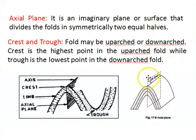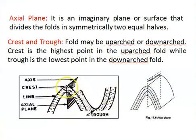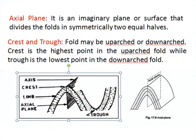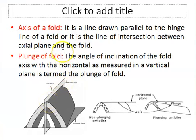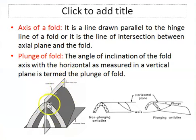The axial plane divides the fold into two equal halves. Crest and trough: folds may be upward or downward — the crest is the highest point in an upward fold while the trough is the lowest point in a downward fold. The fold axis is a line drawn parallel to the hinge line of the fold. It is defined as the line of intersection between the axial plane and the fold. This plane is known as the axial plane, and the fold axis is formed by the intersection between the axial plane and the folded layer.